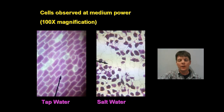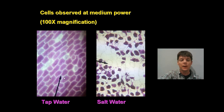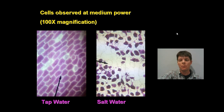Here we're going to zoom in even more to take a closer look at these cells. Note the appearance of the pigment in the red onion cells on the slide prepared using tap water versus the red onion cells shown on the slide prepared using salt water. This is shown with 100 times magnification.